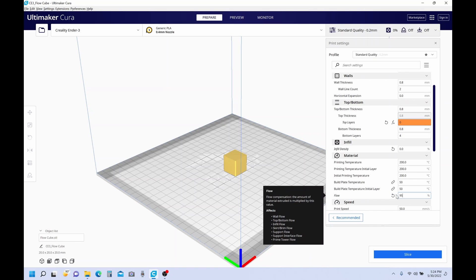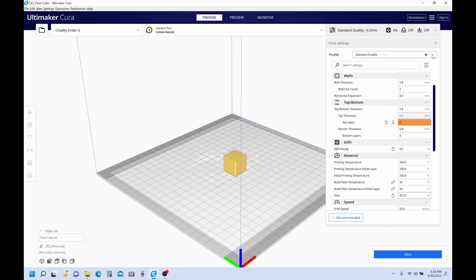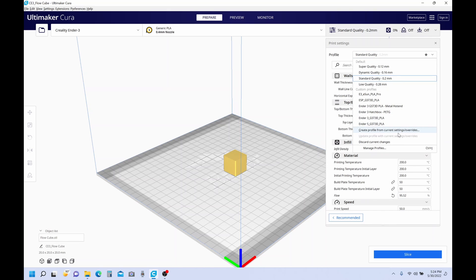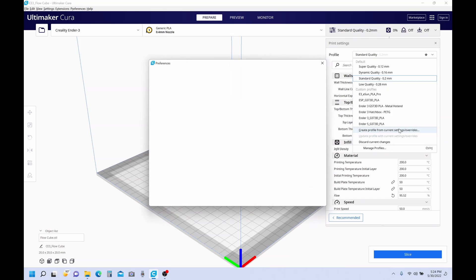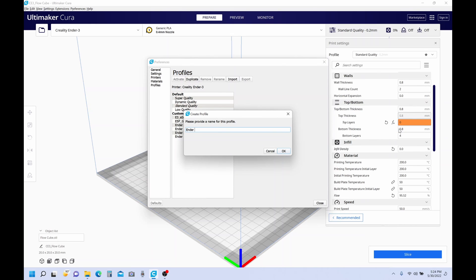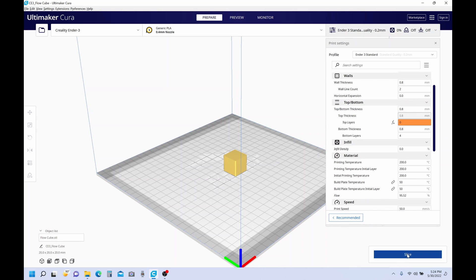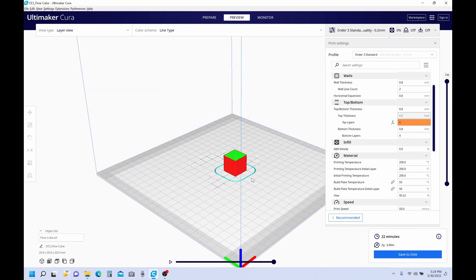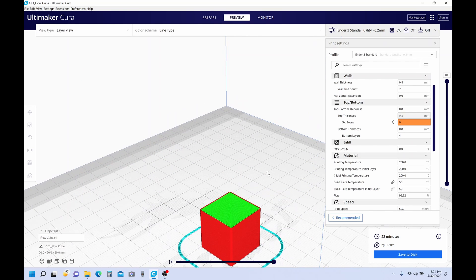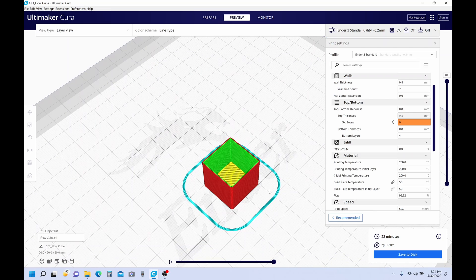We got 95.52. A good idea is to save your profile. Now I'm going to create a new profile here. And I'm going to call it Ender 3 Standard for now. And that way I'm not changing the original. And we'll go ahead and reslice. We'll print it. 22 minutes. And before I slice it, I want to double check to make sure everything looks good. And it does.